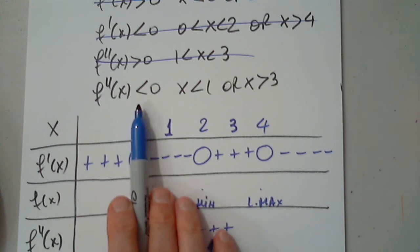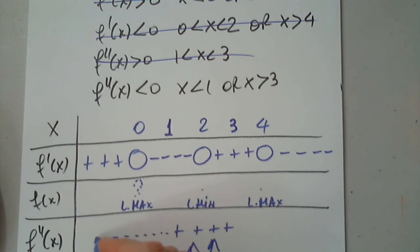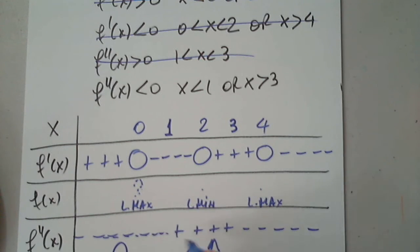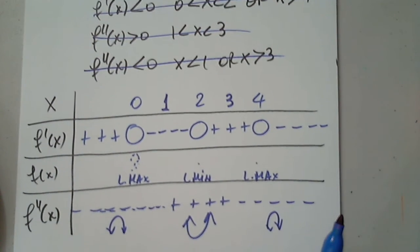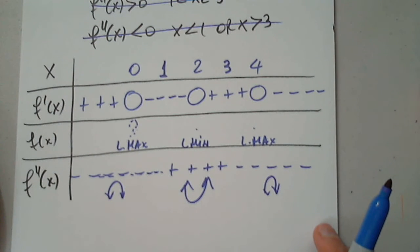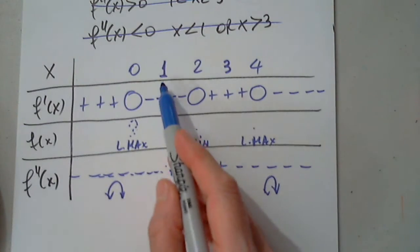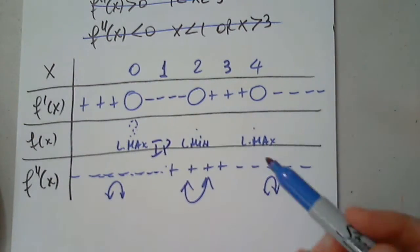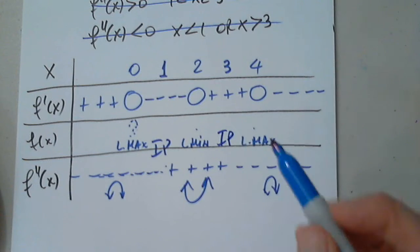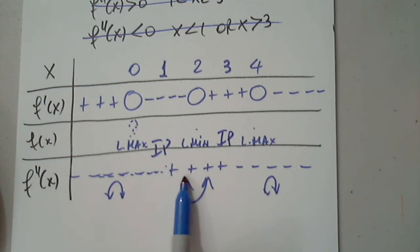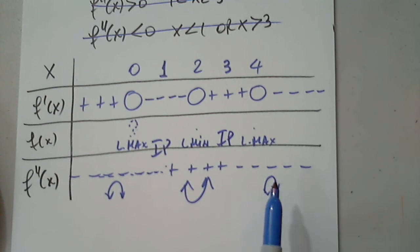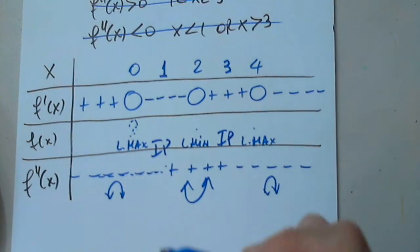The second derivative is positive between 1 and 3, which immediately tells me the concavity. It's negative for less than 1 and greater than 3. So 1 and 3 are inflection points — IP — because the second derivative changes sign, which means the function changes concavity at both x = 1 and x = 3.